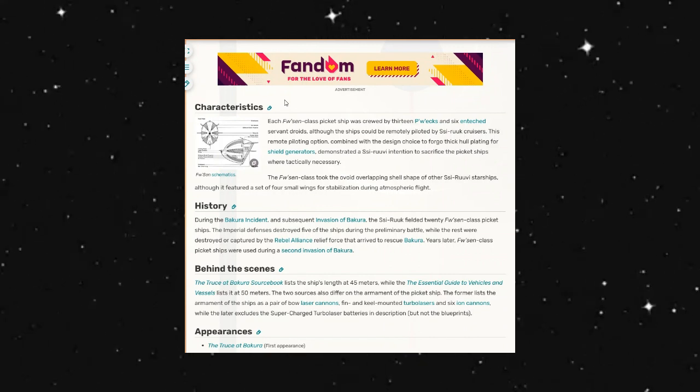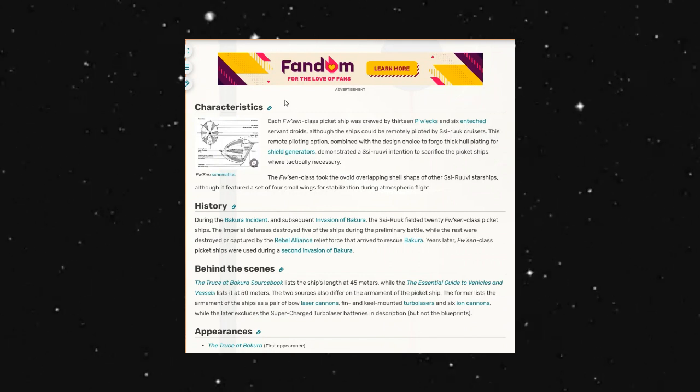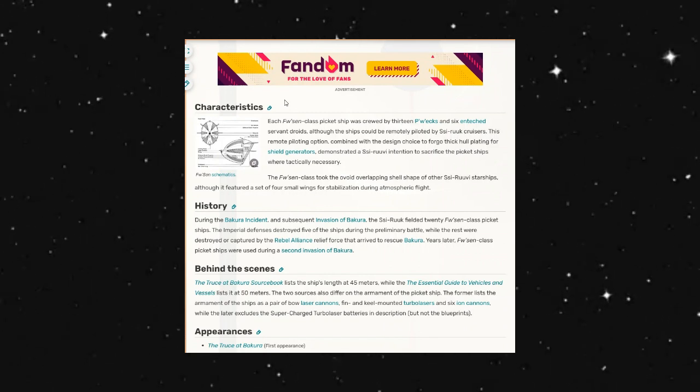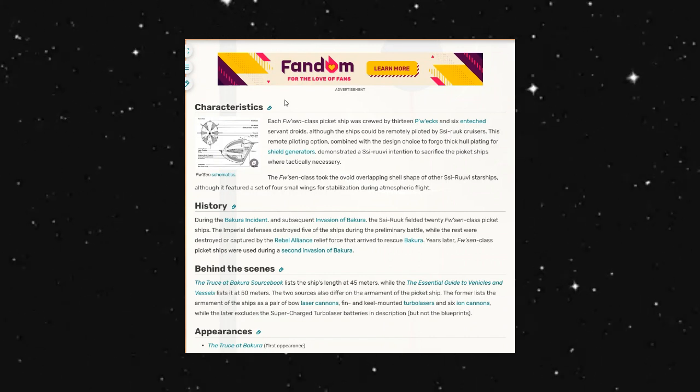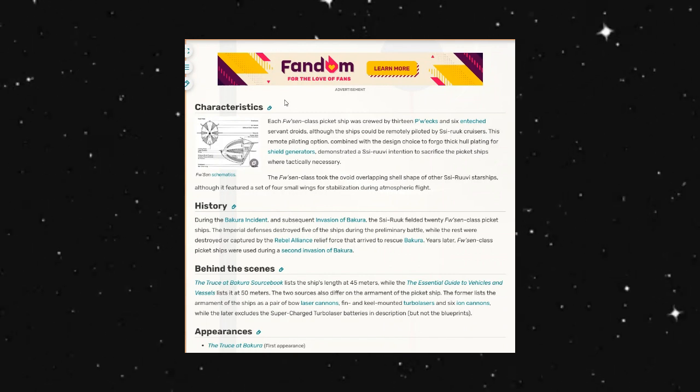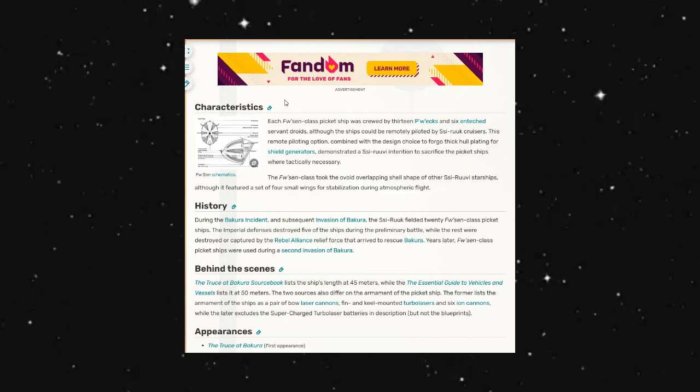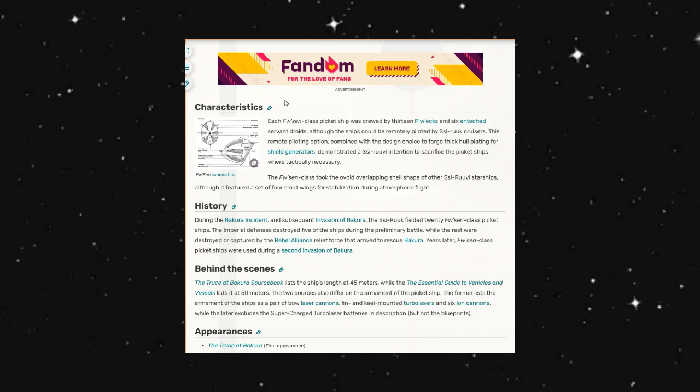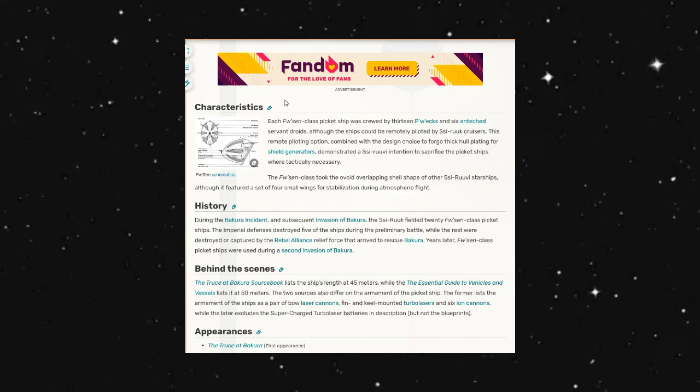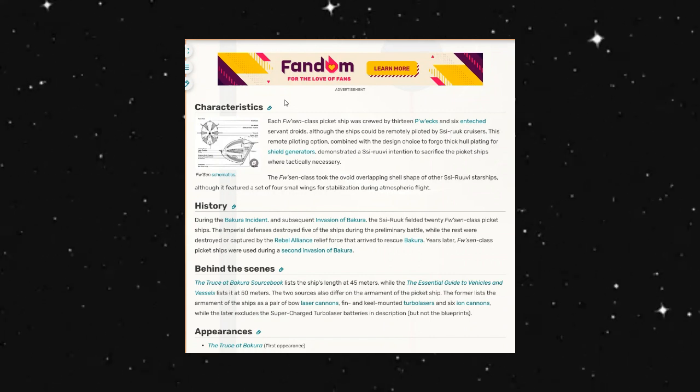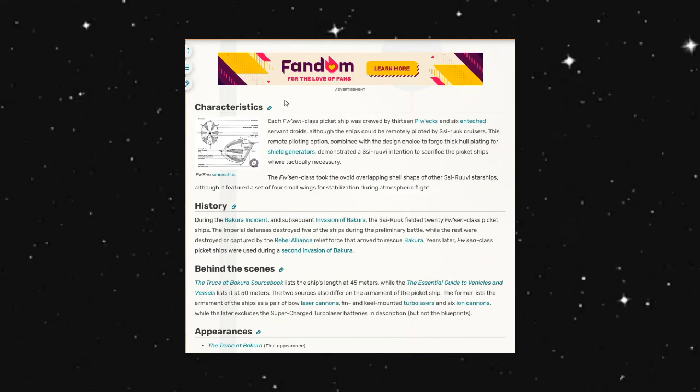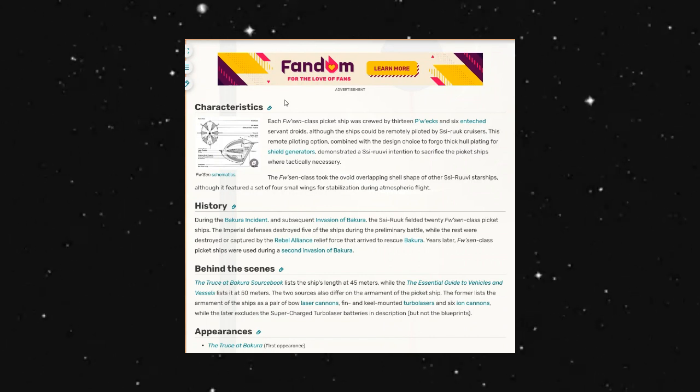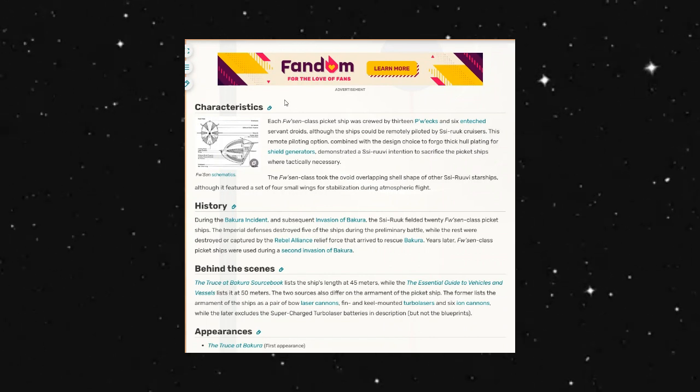History wise, during the Bakura incident and subsequent invasion of Bakura, the Sis Rook fielded 20 Fushin class picket ships. The Imperial defenses destroyed five of these ships during the preliminary battle, while the rest were destroyed or captured by the Rebel Alliance relief force that arrived to rescue Bakura.